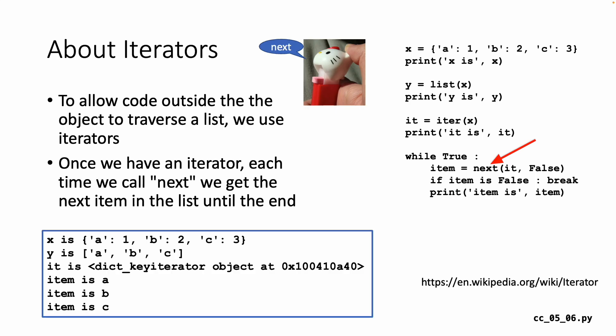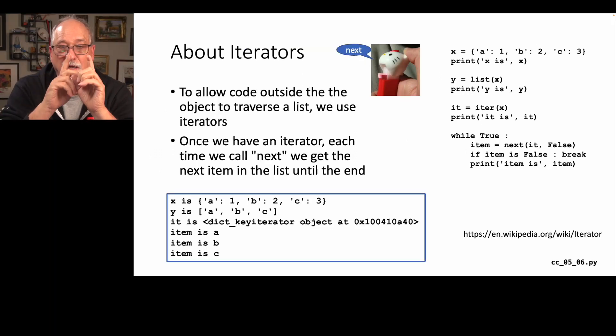And then we're going to poke it by calling next, next, next. Now the whole next thing, that's probably calling an internal method like double underscore next double underscore. So next is part of the Python language. So if you look at the while loop, it's a while true loop. We say item equals next. So that means give me the next available item in the iterator and then advance it. And if we're past the end, return me false. And I say if item is false, break. And otherwise I print the item. And so I'm getting the item is A, B, and C.